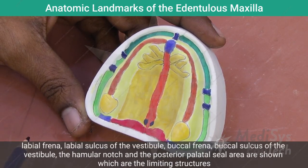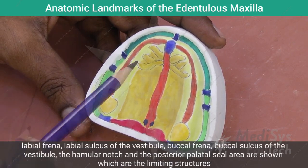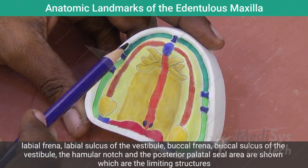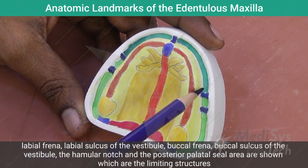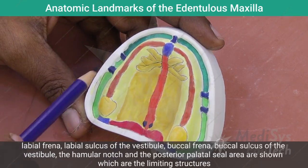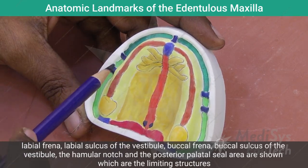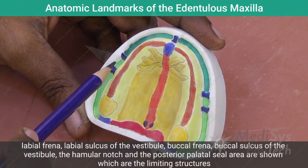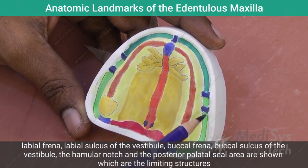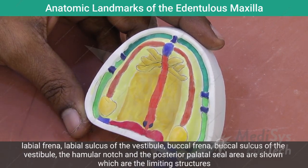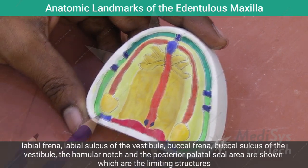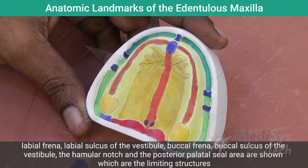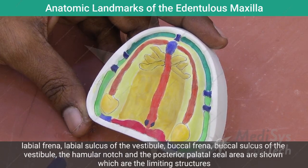The limiting structures include: the labial frenum, the labial vestibule or the sulcus, the buccal freni, the buccal sulcus or the vestibule, the hamular notch, and the posterior palatal seal area.